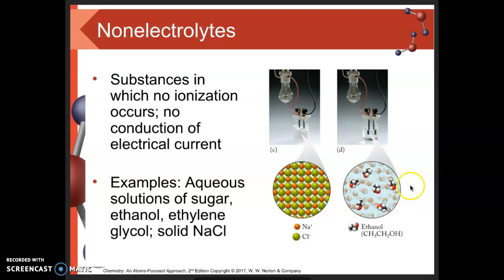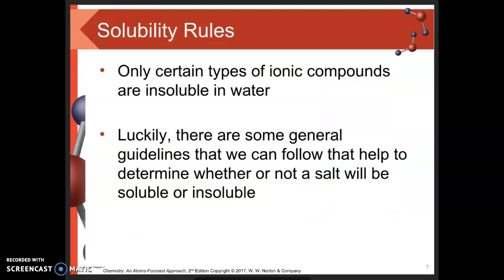How do we start to recognize these kinds of materials? We need to have a good grounding in solubility rules. For strong acids and strong bases, there's a relatively finite list. There are seven strong acids you need to know, so if you recognize an acid and it's not one of the seven, you know it's a weak acid.